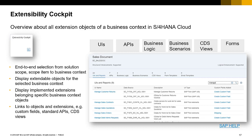A great way to view extensibility end-to-end for a business context is using the Extensibility Cockpit. Here you can see UIs, APIs, business logic, business scenarios, CDS views, and forms. This gives you an end-to-end view of the solution scope for a scope item for a business context. It also displays extensible objects for the selected business context and shows all linked objects and extensions such as custom fields, standard APIs, and CDS views.